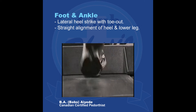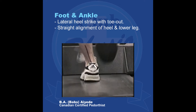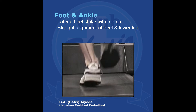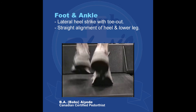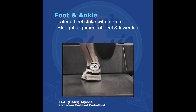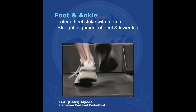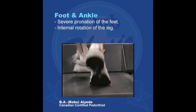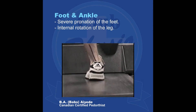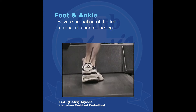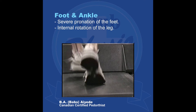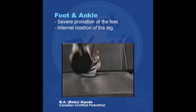As you can see, he strikes on the outside of his heel with his foot in a toed-out position. There's a relatively straight alignment of his heel and lower leg at initial contact. As he progresses into mid stance, there's severe pronation or rolling in of his foot, as well as internal rotation of his leg.